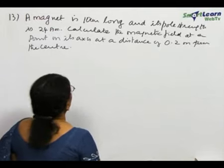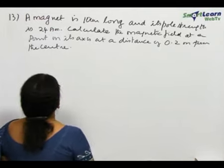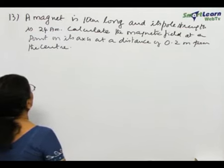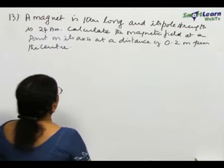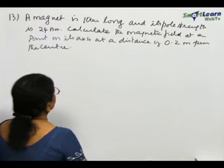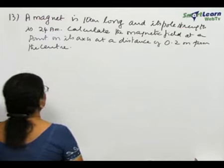Now, let us do numerical problems. Problem number 13: a magnet is 10 centimeter long and its pole strength is 24 ampere meter. Calculate the magnetic field at a point on its axis at a distance 0.2 meter from the center.